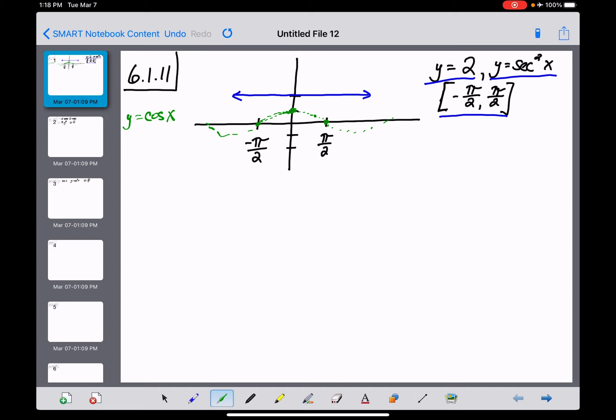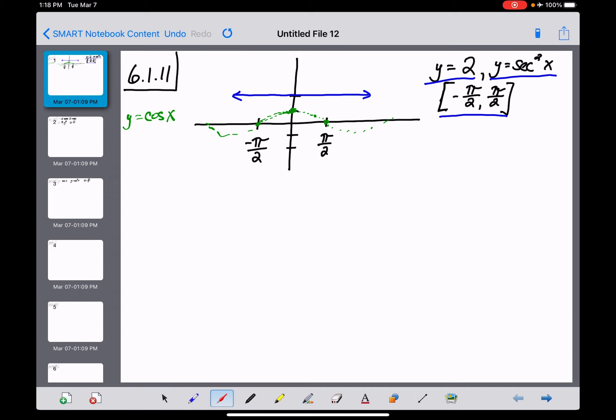If that's the graph of cosine of x, let's switch to red and come up with y equals secant of x, which is just the reciprocal of that green cosine graph. Starting at the point (0,1), when cosine equals 1, secant equals its reciprocal, which is 1. So both graphs pass through the point (0,1).